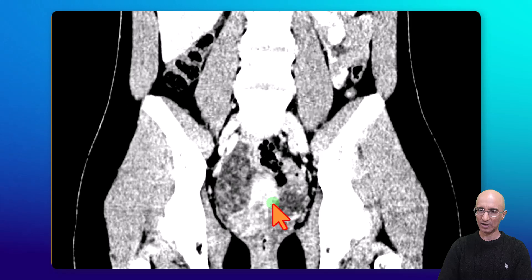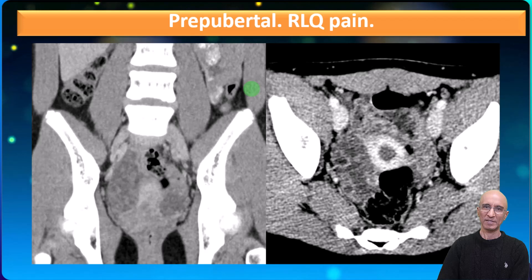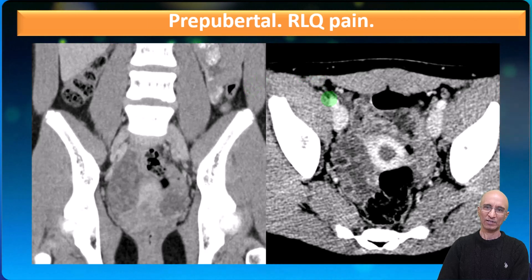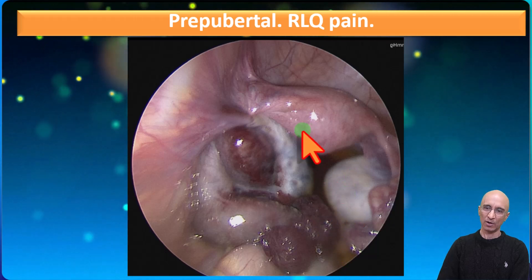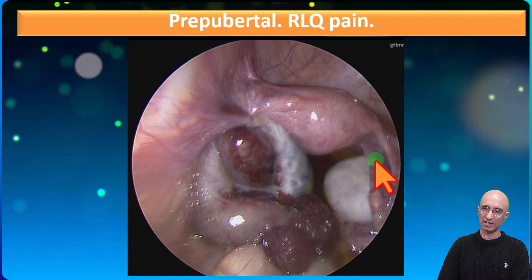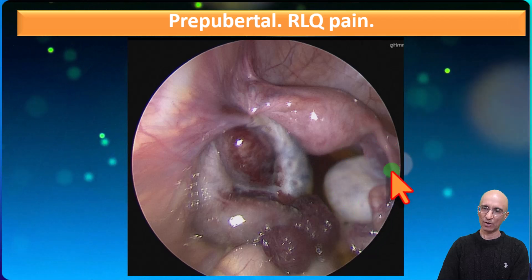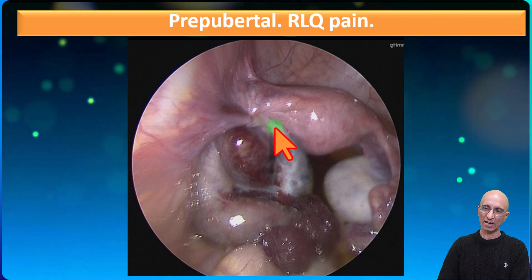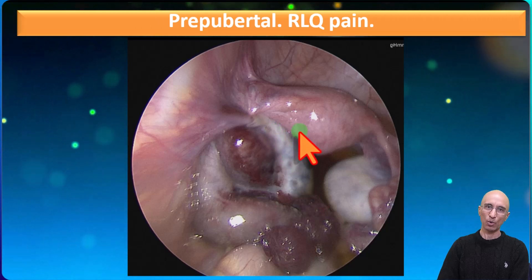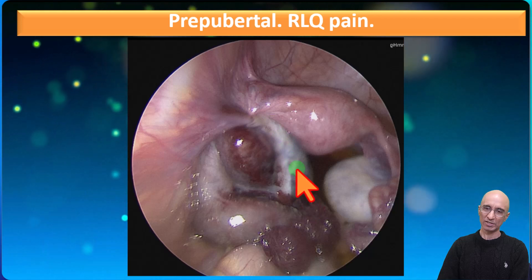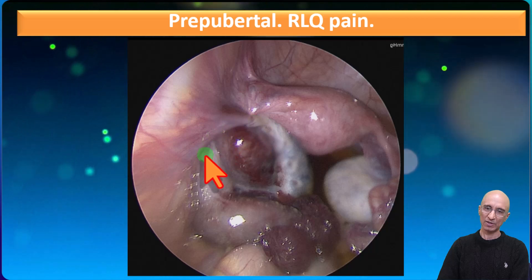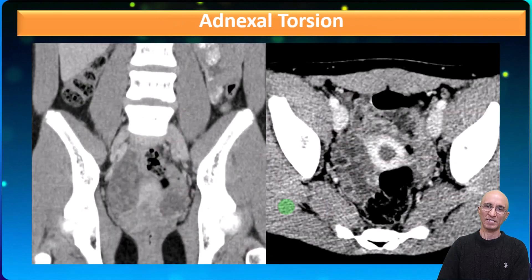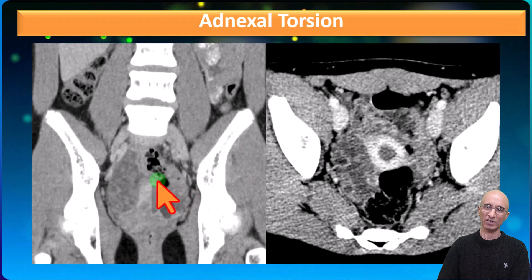Contrast this to the normal-sized left ovary with few follicles. Imaging appearances are highly concerning for adnexal torsion. The patient was taken to the OR for further management, and on the laparoscopy images we can see a normal appearing left ovary and fallopian tube, contrasted to the right ovary which is abnormally positioned posterior to the uterus and has a bluish tinge. Also, we can see a dilated tubular structure adjacent to the right ovary. Imaging appearances are consistent with tubo-ovarian torsion.